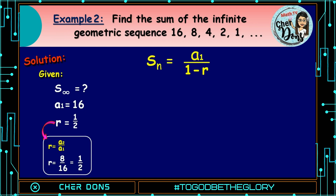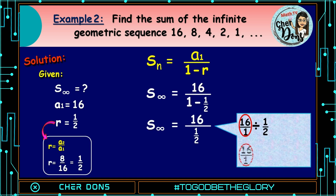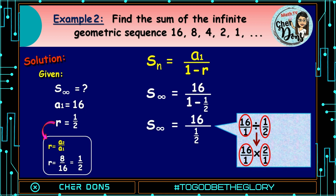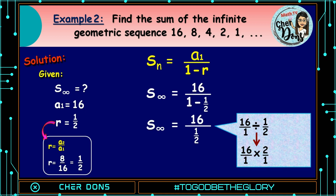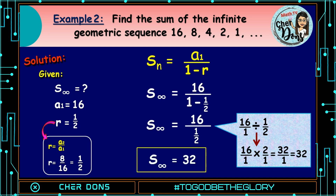Applying the formula, s sub n equals a sub 1 all over 1 minus r, where 16 goes to a sub 1 and 1/2 goes to r. Sum to infinity equals 16 divided by 1 minus 1/2, which is 1/2. So, sum to infinity equals 16 divided by 1/2. Copy the first fraction, change division to multiplication, then get the reciprocal of the second fraction — that's 2/1. Multiply the numerators: 16 times 2 equals 32. Multiply the denominators: 1 times 1 is 1. So the answer is 32/1. Simplifying, we have 32. Therefore, the sum to infinity is equal to 32.